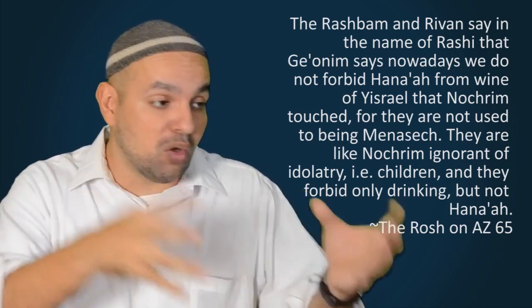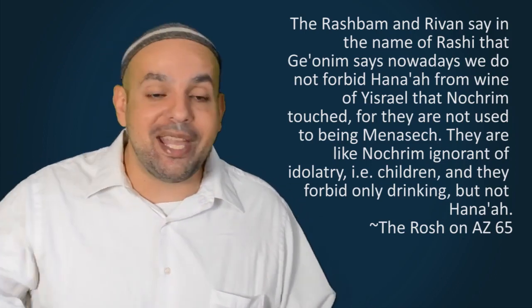The big question is, why did the Rambam feel that Muslims were or could have been different from classical idolaters? One possibility was that he may have thought that because Muslims do not partake of wine, that they would not be menasekh, would not use wine for libations that would in some way place them in a category of nokhrim who were not of avodah zarah. This is ultimately actually a false distinction, because the notion that one is allowed to derive benefits from any non-Jewish wine was not mentioned or ruled upon by Chazal, but by the Geonim.